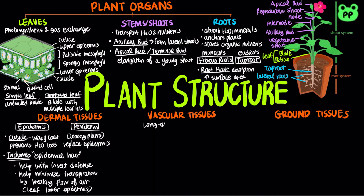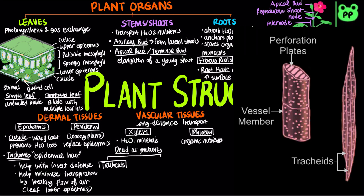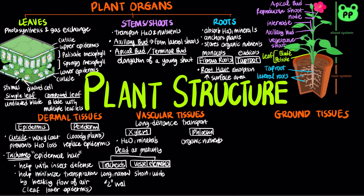The vascular tissue system carries out long-distance transport of materials between roots and shoots. Xylem transports water and minerals, whereas phloem transports organic nutrients from where they are made, called the source, to where they are needed, called the sink. The xylem is composed of two water-conducting cells that are dead at maturity, including the longer and narrower tracheids and the shorter and wider vessel elements. The secondary walls of tracheids and vessel elements are hardened with lignin, which provides support and prevents collapse under the tension of water transport.